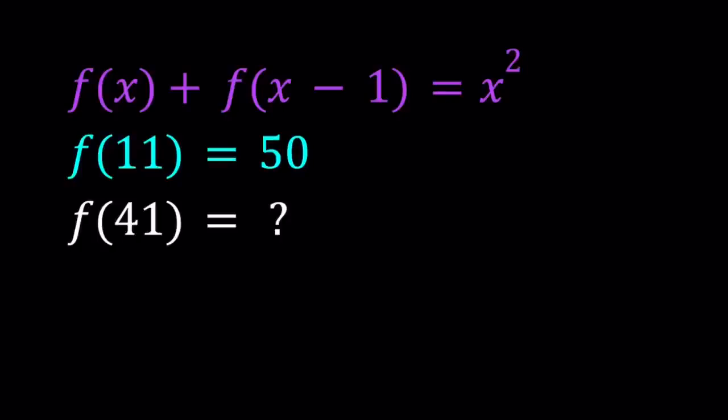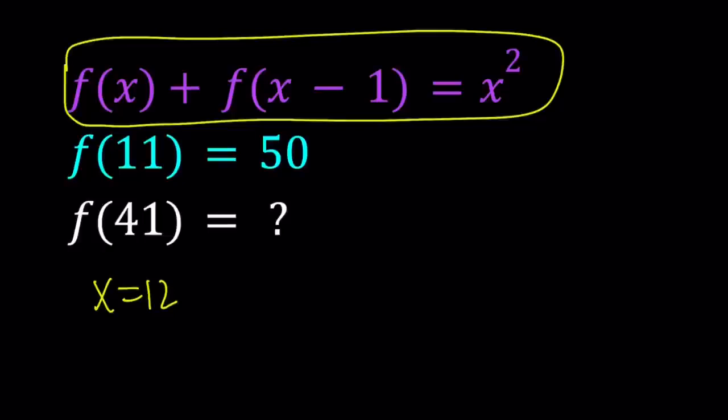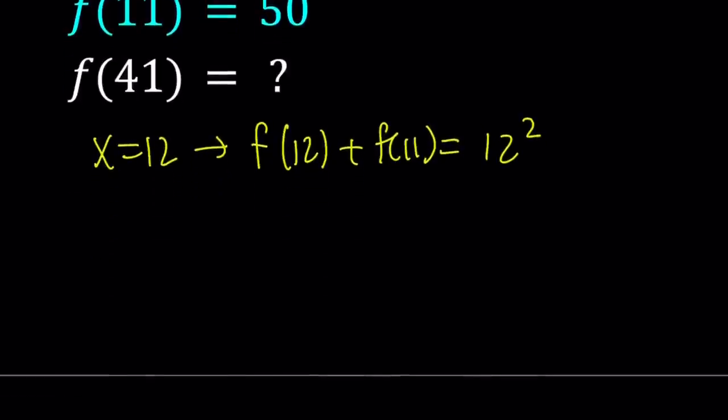Now let's start by replacing x with 12. Since we already know f(11), we can use x = 12 on both sides of this equation. That's going to give us f(12) + f(11) = 12². Notice that the larger number is squared on the right hand side. We can keep doing this until we get a pattern. Our goal is to reach f(41) so we're going to have to take some steps.